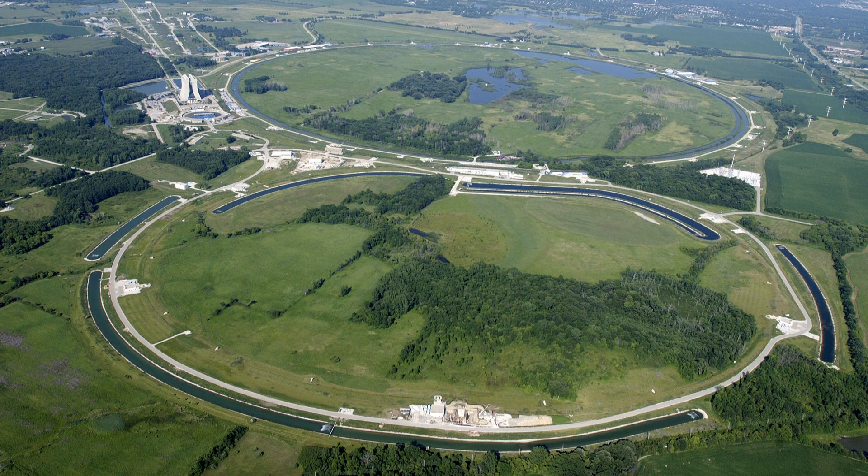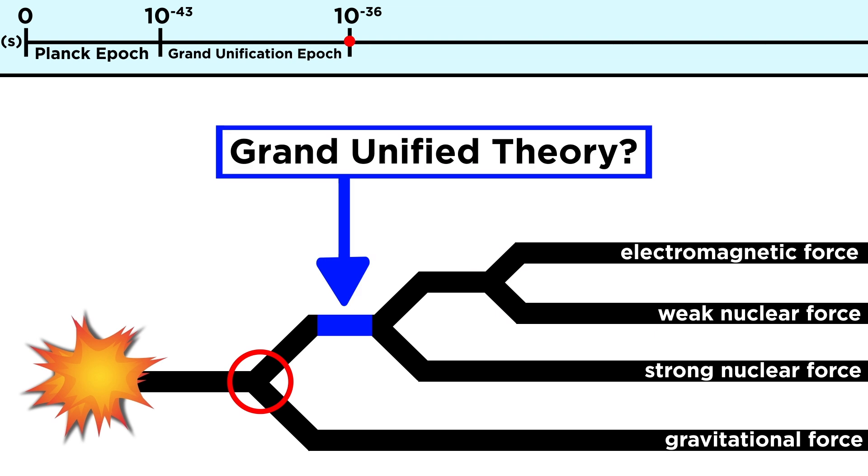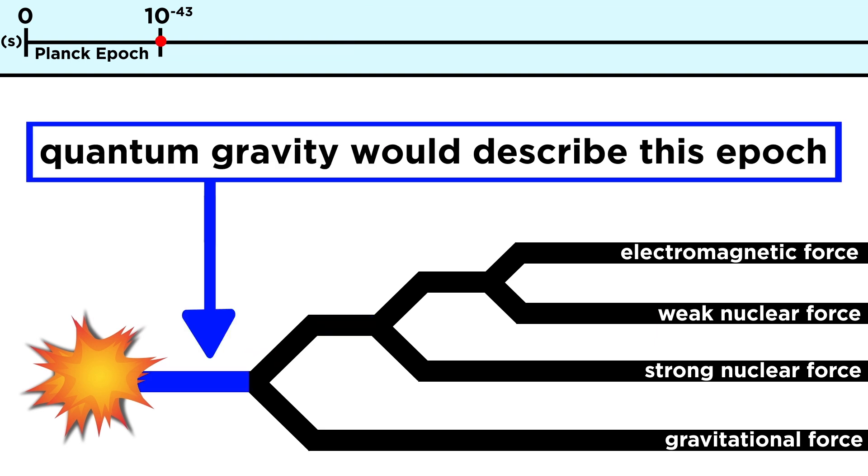As we build more and more powerful particle accelerators, we can generate collisions that yield more and more energy, thus probing earlier and earlier towards the initial singularity. This will help us produce theories that describe the unification of the electroweak force with the strong nuclear force, and maybe one day all four forces, as they were in the very first epoch of the universe.